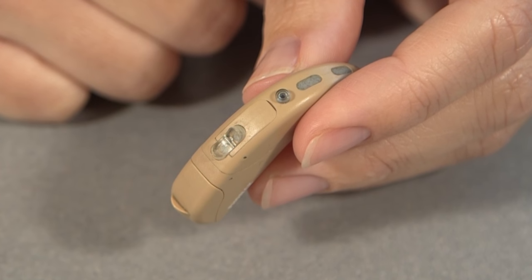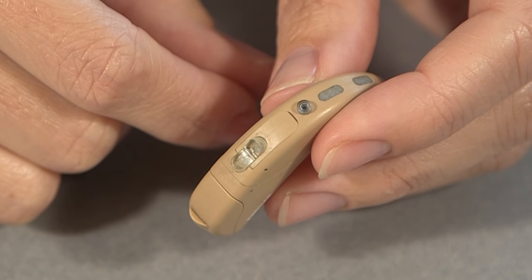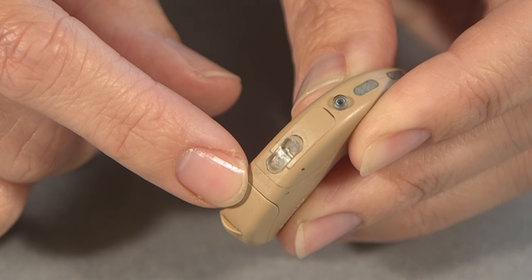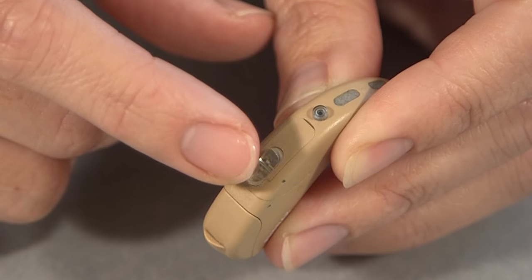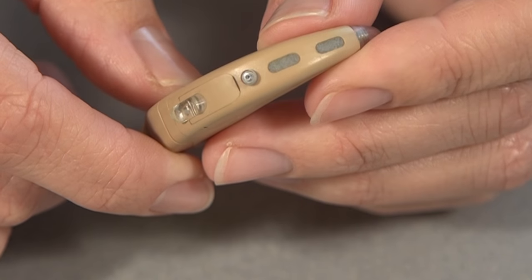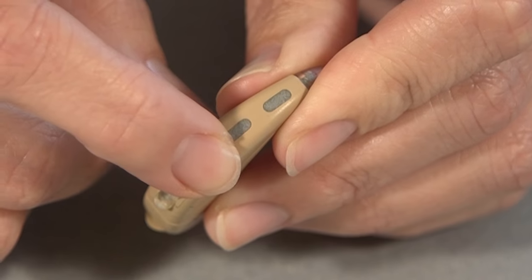If your hearing aid has two different controls on the back, one is the program button and one is the volume control. In this case, the person can access the different programs by just pressing the round button at the top.